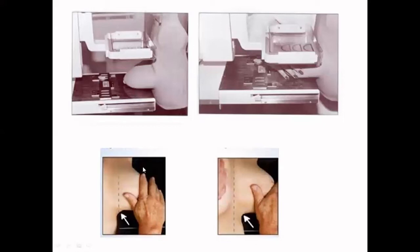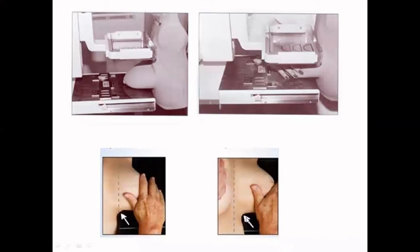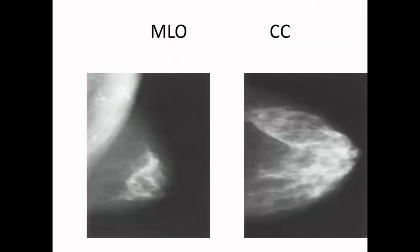For the medial-lateral oblique view, the mammography machine is tilted at an angle of 30 to 60 degrees — whatever is comfortable for the patient. The ipsilateral hand holds the handle on that side. It is very important to pull the breast tissue forward so that the inframammary fold is included in the image on both the CC and MLO views.